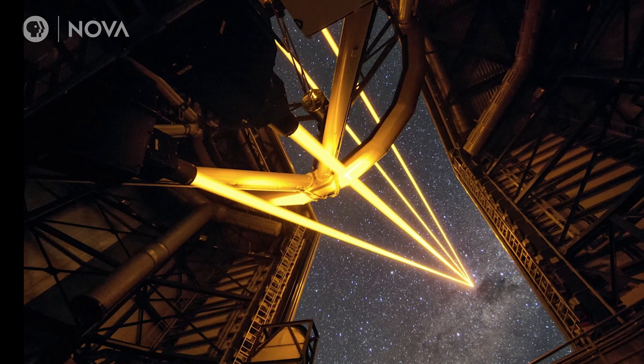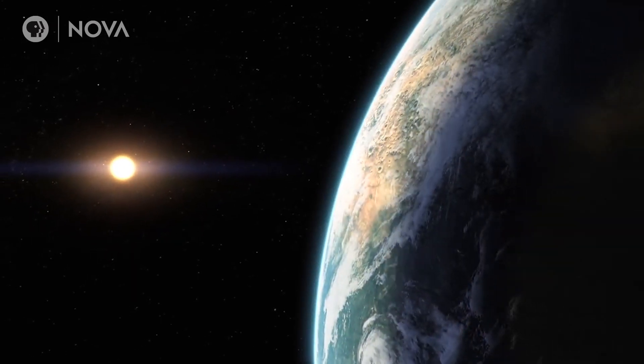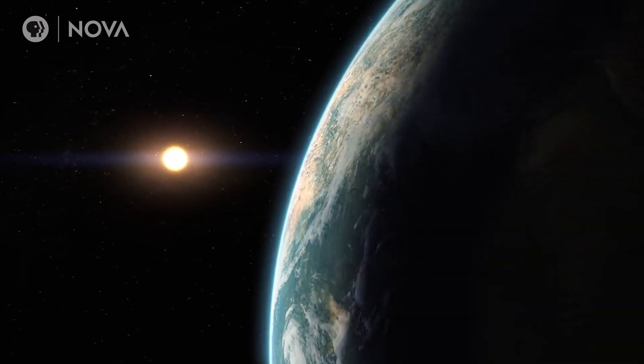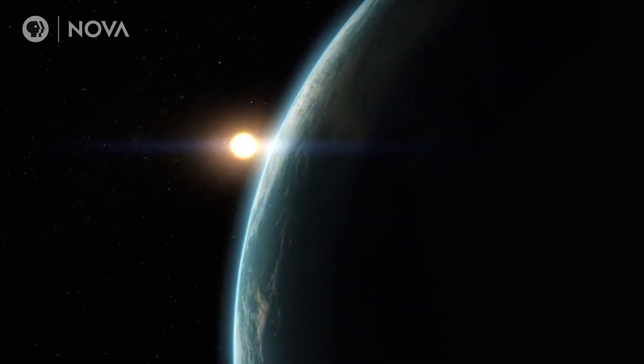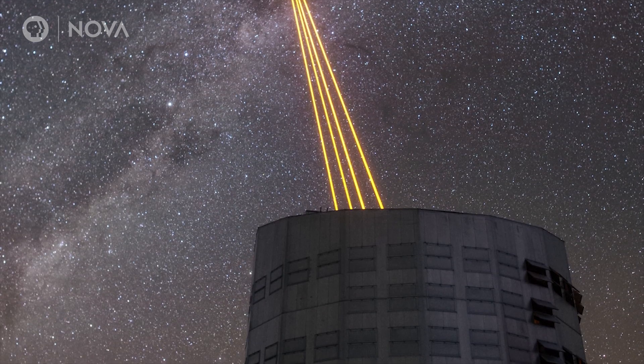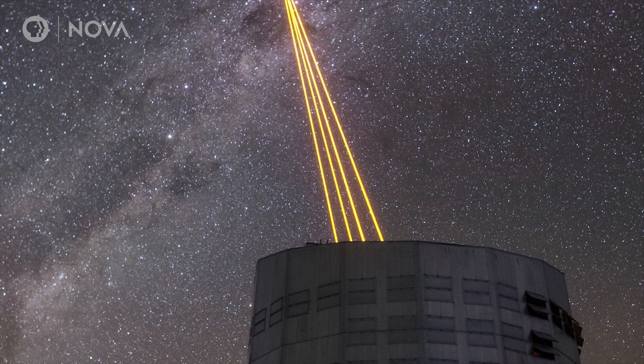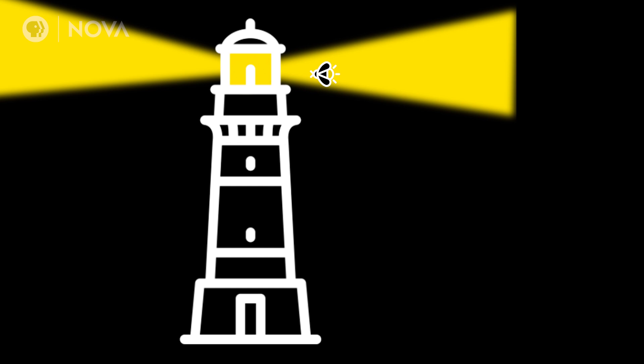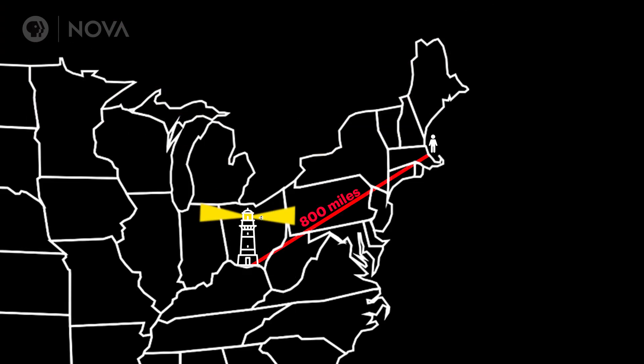Making images of exoplanets — planets that rotate around other stars than our sun — is a big deal because it's hard. It's a little bit like trying to see a firefly right next to a lighthouse at about 800 miles.